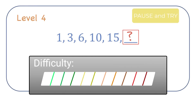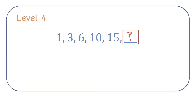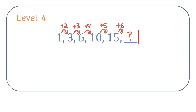Level 4. If I look at these numbers, there's not a common difference or a common ratio, but I notice the difference between the first two terms is 2, then 3, then 4, then 5. So the next two numbers are going to have a difference of 6. So if I do 15 plus 6, I get my next number. 15 plus 6 is 21.